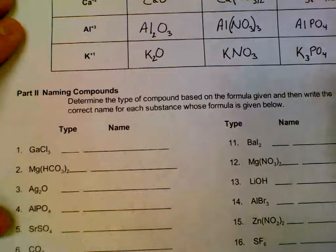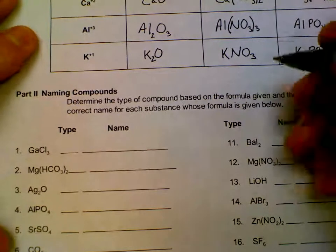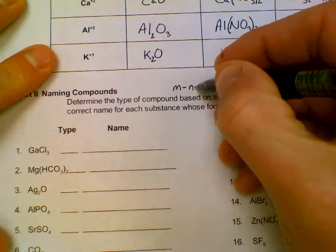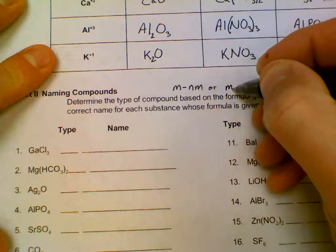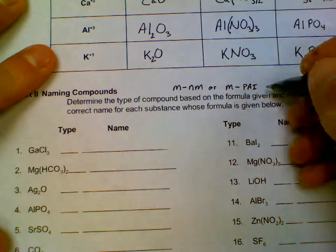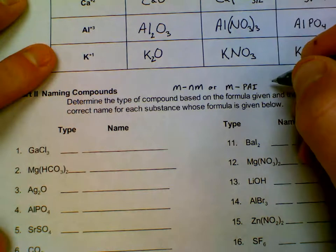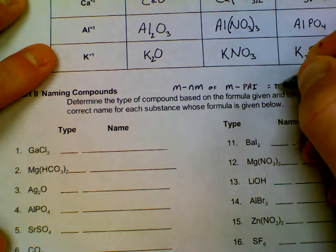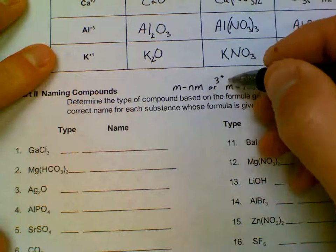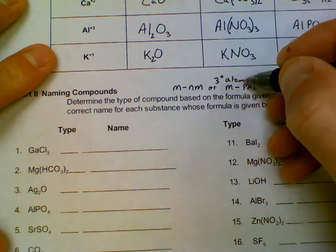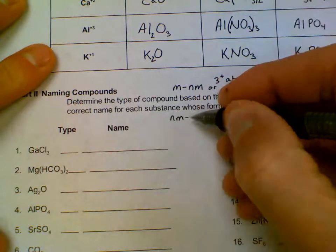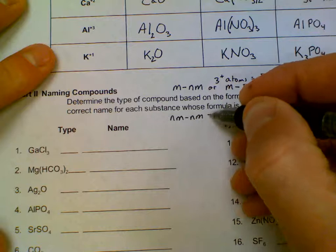Part 2, naming compounds. We have to decide if we have an ionic or a covalent compound. Please recall that a metal stuck to a nonmetal or a metal stuck to a polyatomic ion would be ionic. The other way that we can do that is if there are three or more atoms equals ionic. Nonmetal stuck to a nonmetal equals covalent.